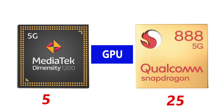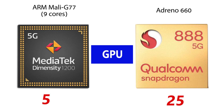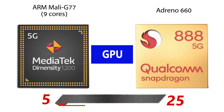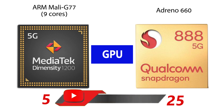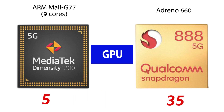The GPU category saw Snapdragon winning again, because the MediaTek Dimensity 1200 features last two years' generation ARM Mali G77 GPU with 9 cores. The GPU is old-fashioned and it is that of 2019, as such it can't compete with the Android 660's fast graphics rendering. So the Snapdragon 888 has the best GPU for gaming and graphics rendering.